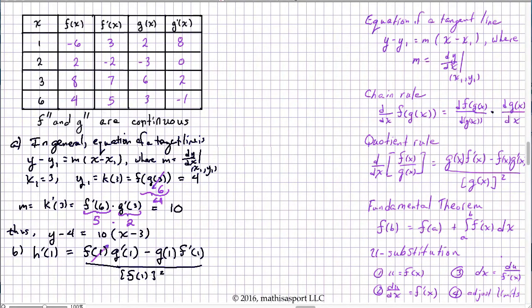So it's really left to us to simply plug in the appropriate quantities. What do we have here? f of 1 is negative 6, g prime of 1 is 8, g of 1 is 2, f prime of 1 is 3, f of 1 again is negative 6. Putting that together we're going to get that h prime of 1 equals negative 48 minus 6 all over 36 which simplifies to negative 3 over 2.